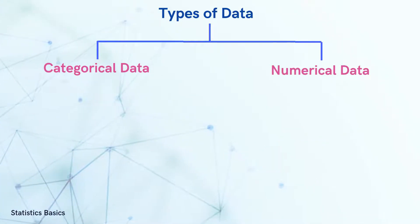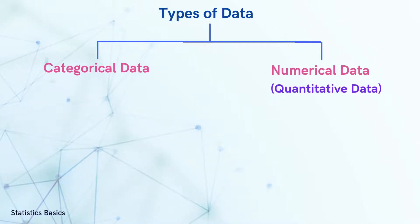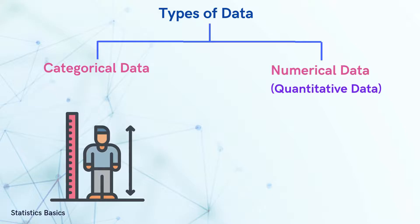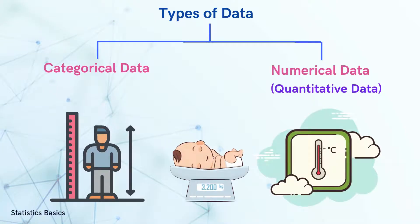Now let's move on to the second type of data that is numerical data. Numerical data is often referred to as quantitative data because it represents quantities or measurements, for instance, the height of students, the weight of newborn babies, or the temperature outside. These are all examples of numerical data.